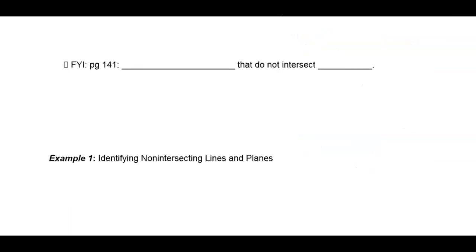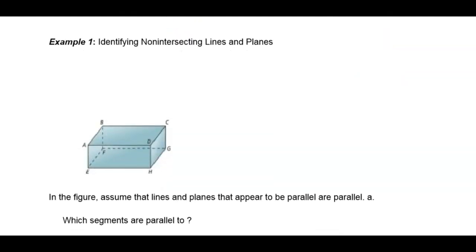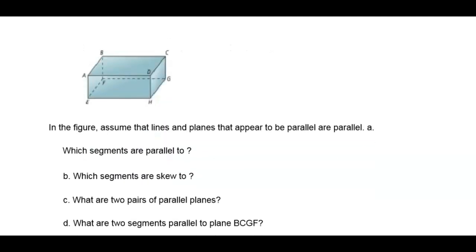A little extra piece of information: lines and planes that do not intersect can be parallel. A line can be parallel to a plane, and a plane can be parallel to a line.